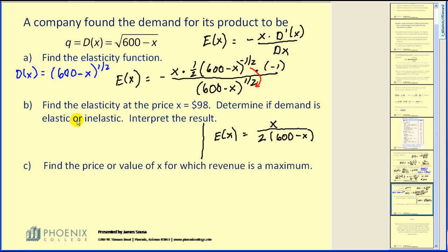Okay, let's go ahead and look at part b. Again, this is the answer for part a. Find the elasticity at price x equals 98, so we need to find E of 98. We have 98 in the numerator divided by two times, now 600 minus 98 would be 502. And this is going to equal 0.098. Again, this is very inelastic, which means an increase in price will bring an increase in revenue.